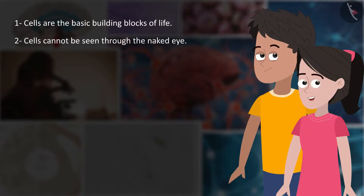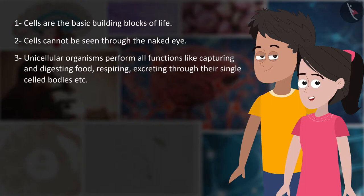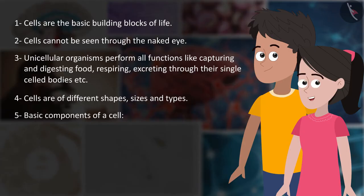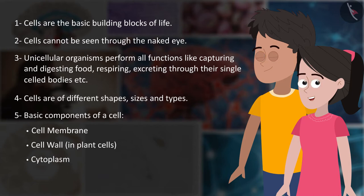Let us summarize our learning. Cells are the basic building blocks of life. Cells cannot be seen through the naked eye. Unicellular organisms perform all functions like capturing and digesting food, respiring, excreting through their single-celled bodies. Cells are of different shapes, sizes, and types. Basic components of a cell: cell membrane, cell wall in plant cells, cytoplasm, nucleus.